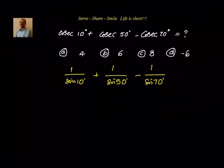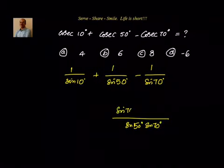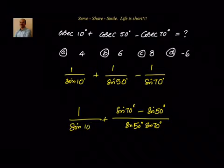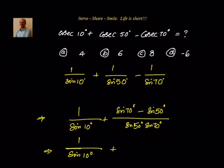Can I take LCM of these two and write it down as sine 50 into sine 70? Here it is sine 70 minus sine 50 degrees. We will leave 1 by sine 10 like this for some more time. Our next step is we can apply the transformations — we can write down 1 by sine 10 plus sine C minus sine D.